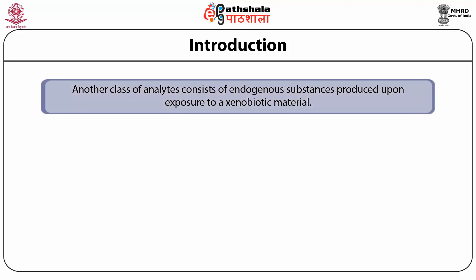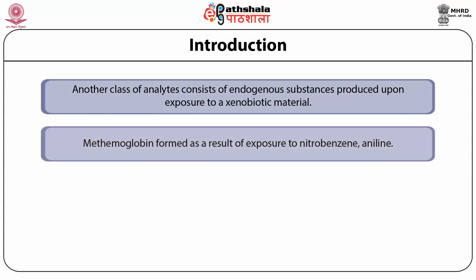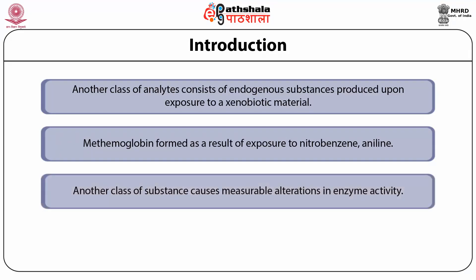Another class of analytes consists of endogenous substances produced upon exposure to a xenobiotic material. Methemoglobin, formed as a result of exposure to nitrobenzene, aniline and related compounds, is an example of such a substance which does not contain any of the original xenobiotic material. Another class of substances causes measurable alteration in enzyme activity — the most common example being the inhibition of acetylcholinesterase enzyme by organophosphates or carbamate insecticides.